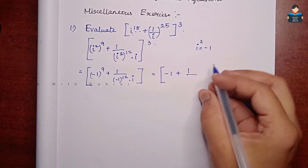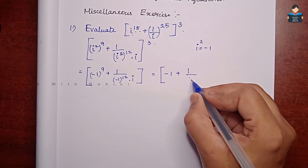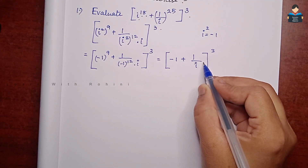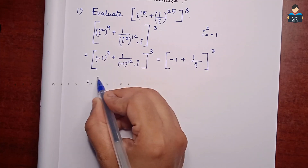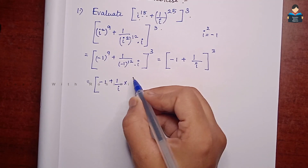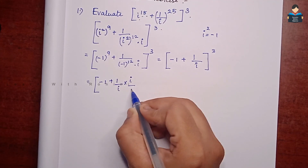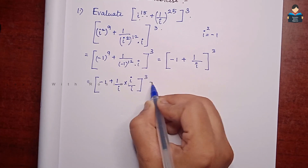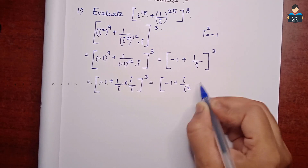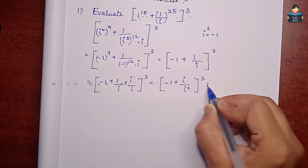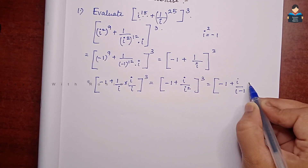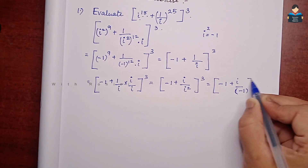For i to the power 25, the exponent 12 is even, so that part equals 1, and we are left with 1 into i, which is i. We should not keep i in the denominator. So we multiply and divide by i: minus 1 plus 1 by i, multiply and divide by i, giving minus 1 plus i by i square, the whole cube.